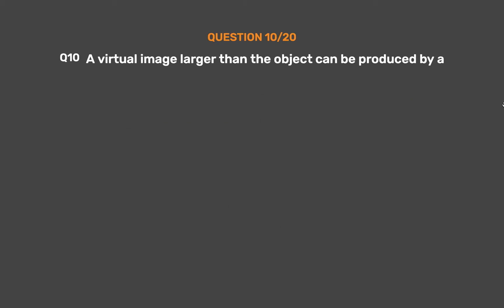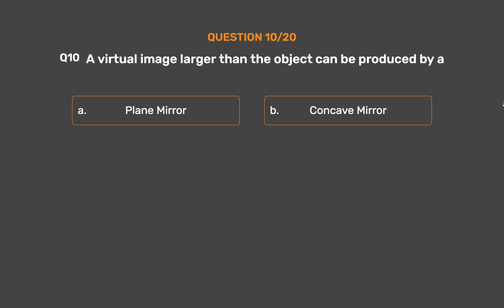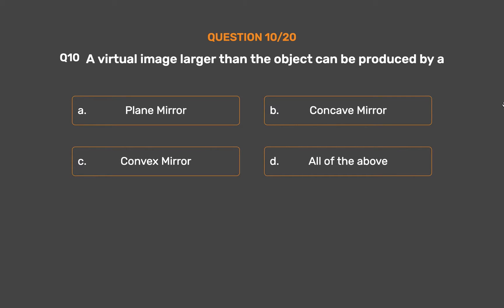Question number 10. A virtual image larger than the object can be produced by: option A, plane mirror; option B, concave mirror; option C, convex mirror; option D, all of the above. The correct answer is option A, plane mirror.